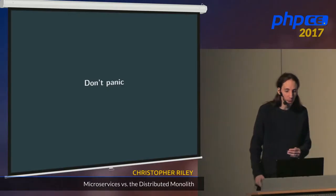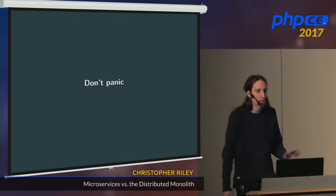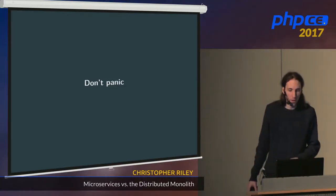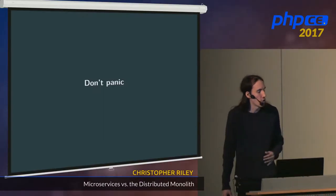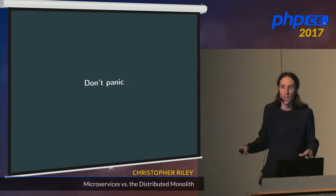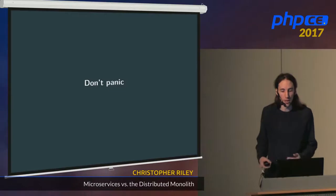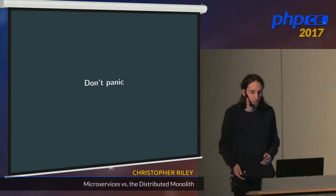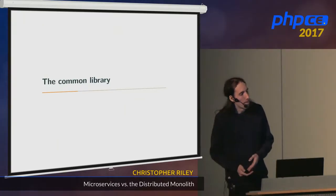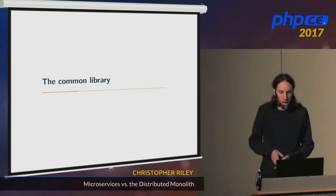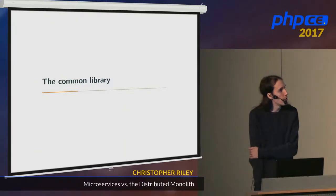Don't panic — you might feel after listening to this section that microservices are a hugely bad idea you should never touch. But thankfully, a lot of the issues I'm going to cover weren't all in one system — they're different things I've picked up whilst working for a variety of different companies over several years. Problem number one: the common library. It's probably the mistake I've seen the most often in service-oriented architecture and microservices.